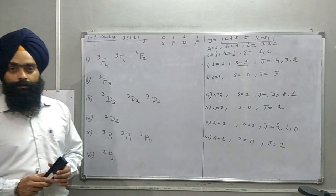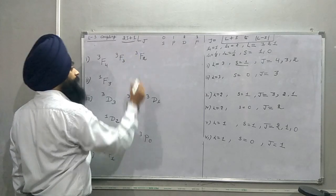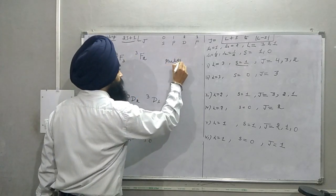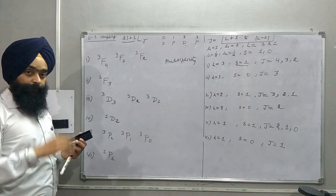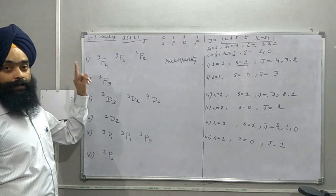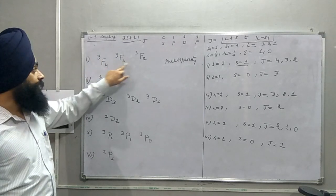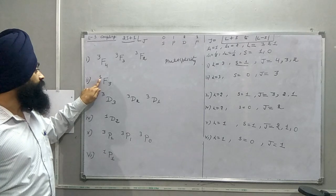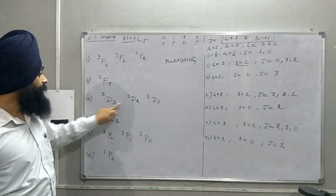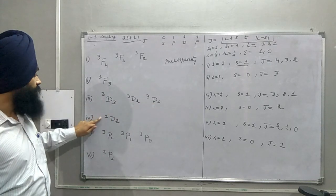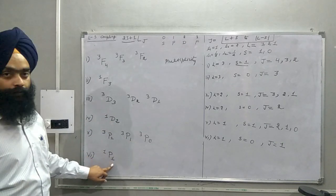One very important point here: the value 2S+1 is called the multiplicity. Multiplicity gives the number of J values corresponding to a given L and S. For example, where multiplicity is 3, we have three term values; where multiplicity is 1, we have only one term value. This confirms our calculated spectroscopic terms for the LS coupling example.